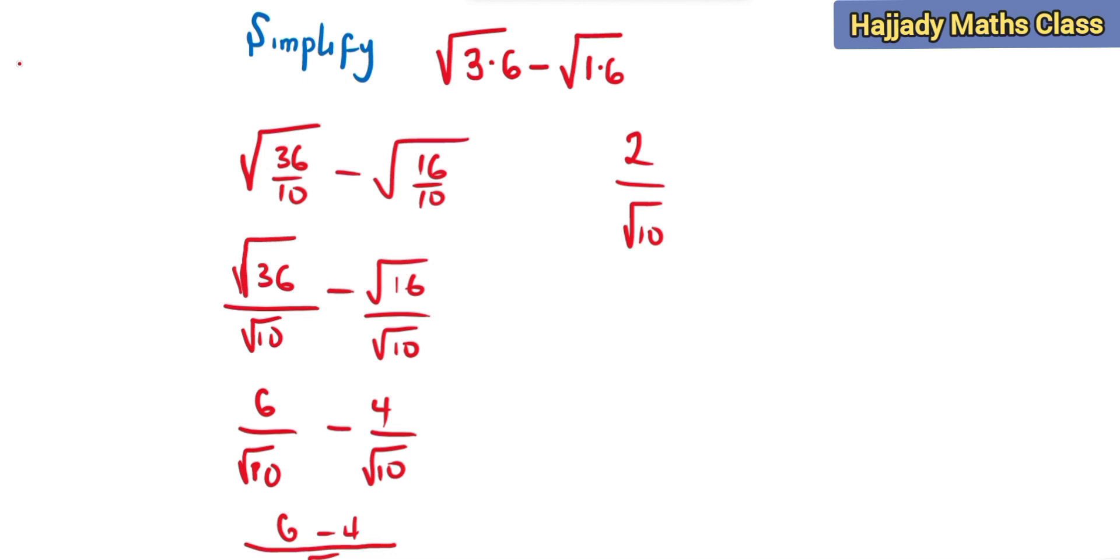From the law of surds there's a need for us to rationalize. And by rationalizing this we multiply both numerator and denominator by root 10. So 2 times root 10 gives us 2 root 10. From the law of surds, root A times root A is going to be A. So root 10 times root 10 is going to give us 10.